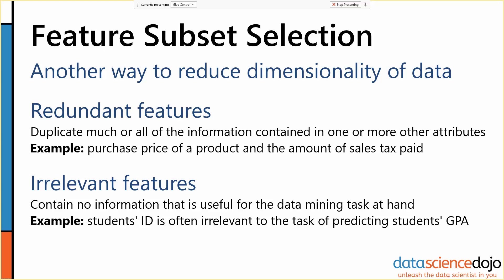Similarly, irrelevant features can confuse our model. The model will try to do some fitting based on those features, and it'll just sort of diffuse the effectiveness of the model. So one of our big steps of data pre-processing is making sure we figure out what attributes are redundant and irrelevant and aggressively cutting them out of our data set.